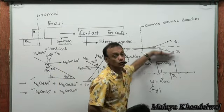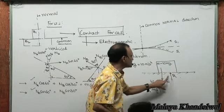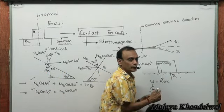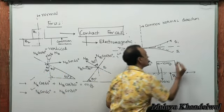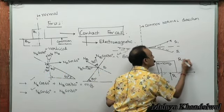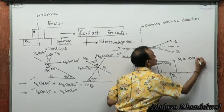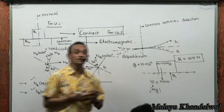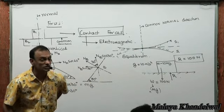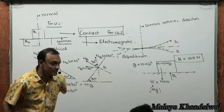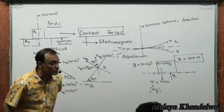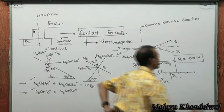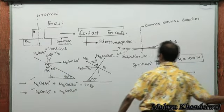If there is no vertical acceleration, R must balance the weight, so R equals 100 newtons in this case. But do not always assume R will be equal to the weight — that is not generally true.